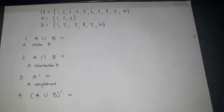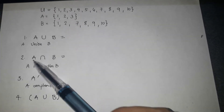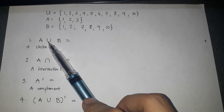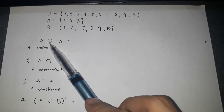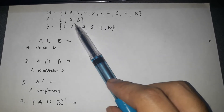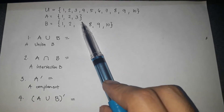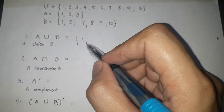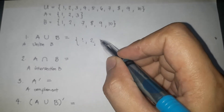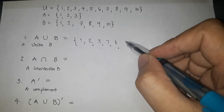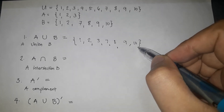So the first operation is the union. Number 1: A union B. The symbol is like the letter U. The meaning of A union B is you just combine the elements of A and B. So the elements are 1, 2, 3, 7, 8, 9, and 10.